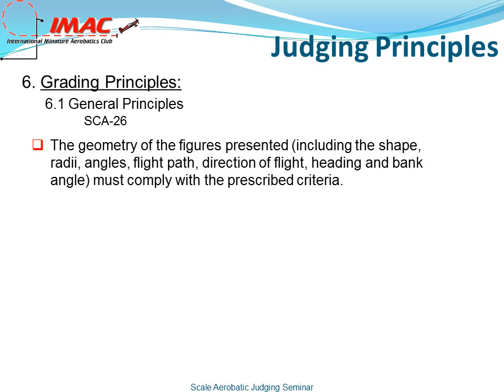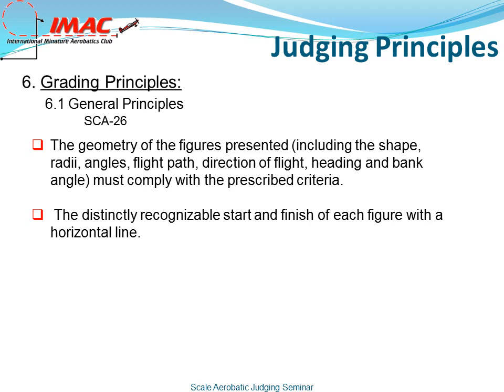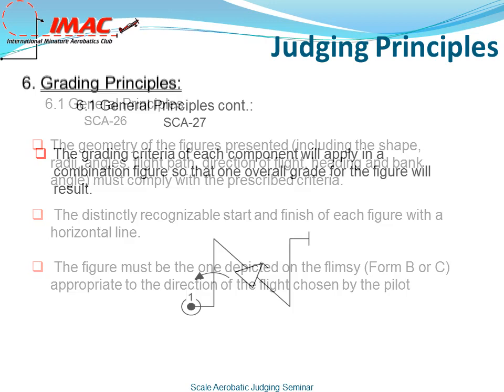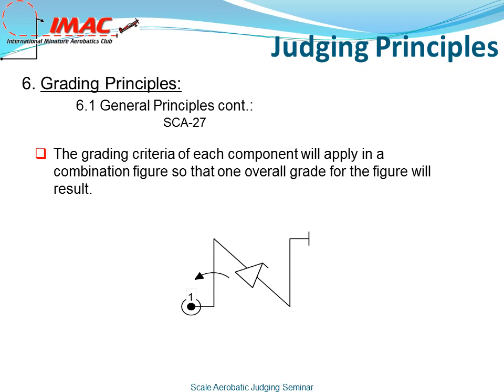Rule 6.1 — General Principles, from the rule book, page 26. The geometry of figures presented, including the shape, radii, angles, flight path, direction of flight, heading, and bank angle, must comply with the prescribed criteria. The distinctly recognizable start and finish of each figure within a horizontal line — the figure must be the one depicted on the flimsy, form B or C, appropriate to the direction of flight chosen by the pilot. The grading criteria of each component will apply in a combination figure so that one overall grade for the figure will result.